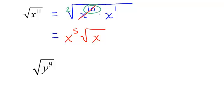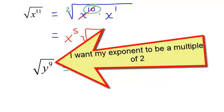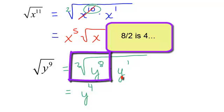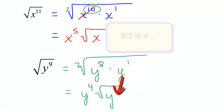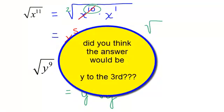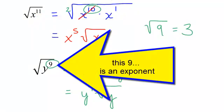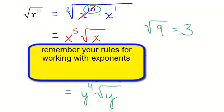The square root of y to the 9th. This is a square root, so I want a multiple of 2. 9 is not a multiple of 2. I drop down to y to the 8th times y to the 1st. The square root of y to the 8th is perfect — it comes out as y to the 4th. The square root of y to the 1st just hangs out — it is not perfect. Be careful: the number 9 and the exponent 9 are different things and follow different rules.